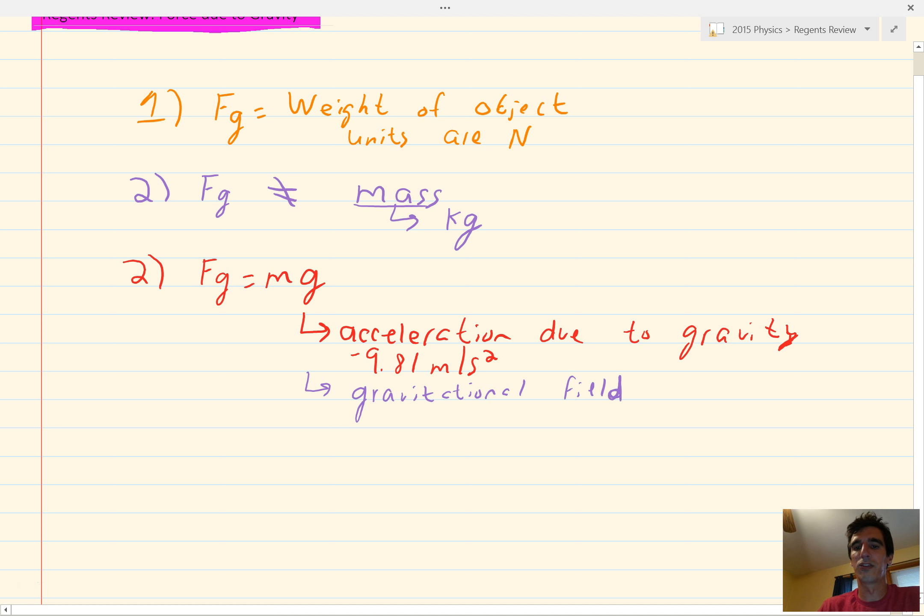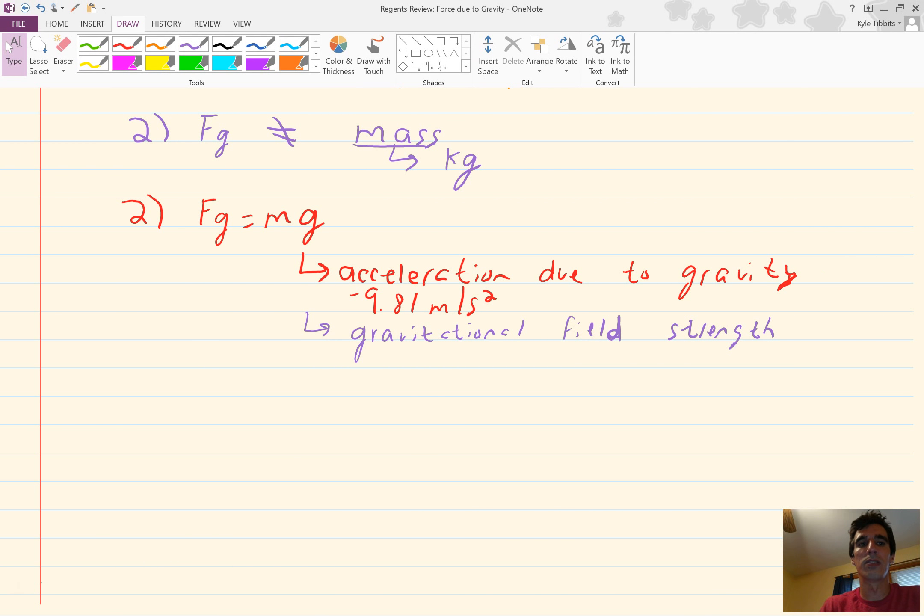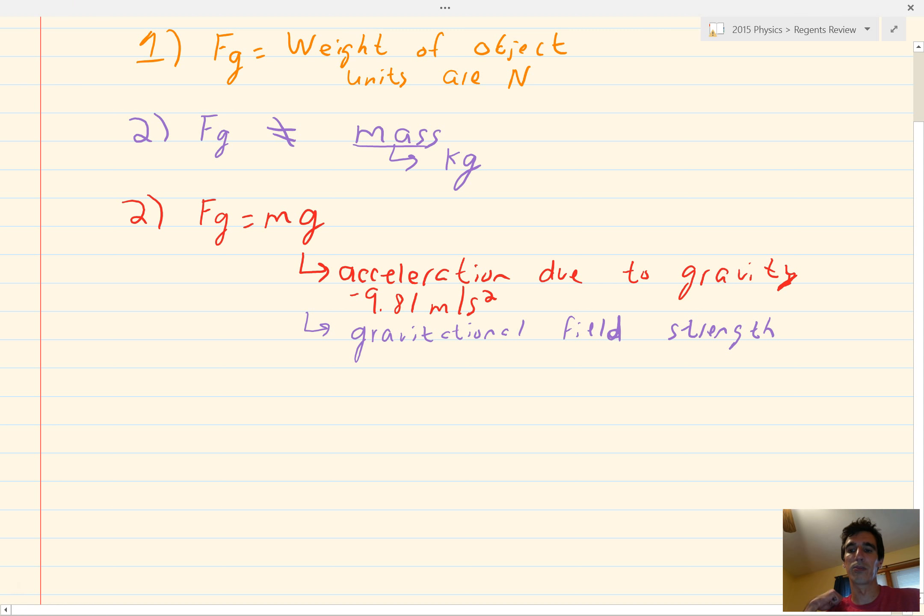And, that's right next to g in your reference tables. Now, sometimes you'll be asked to find your weight, or the acceleration due to gravity on a different planet, or the force of gravity on a different planet. So, the next thing. This should be 3. Sorry. Number 4.